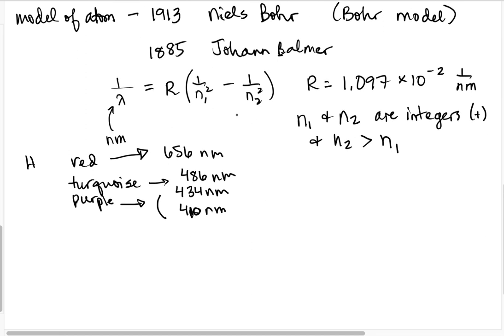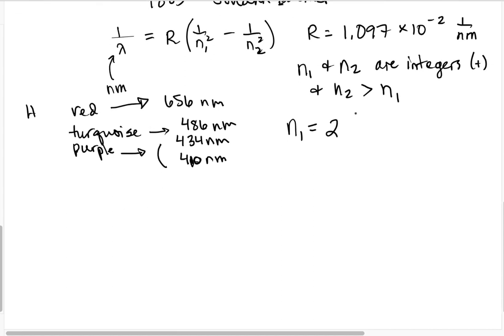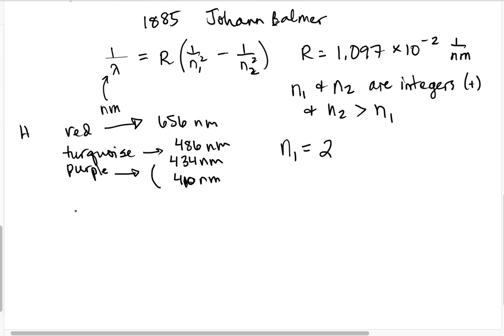And you can figure out an n1 and an n2 if you try. And it turns out that our n1 is equal to 2 for all of these different wavelengths. So let's take a second and figure out what n2 would be for this one. So we would have 1 over, we'll just try it for the red one. 1 over 656 nanometers is equal to 1.097 times 10 to the minus 2, 1 over nanometer, times 1 over 4, minus 1 over n2 squared. Okay, so don't freak out, these are just numbers.